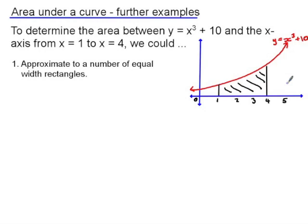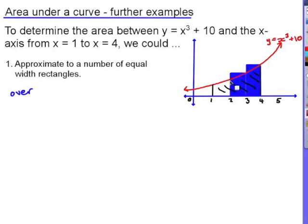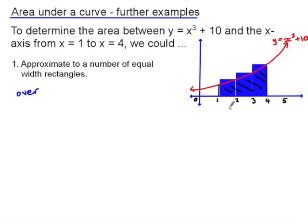We now have several methods for working out the area under a curve. First, we can approximate the area using a number of equal-width rectangles. To find an overestimate, we draw rectangles which fit over the curve. I've divided the width into 3 rectangles, each with width 1 unit. The curve has the equation y equals x cubed plus 10, so my y values are 74, 37, and 18.